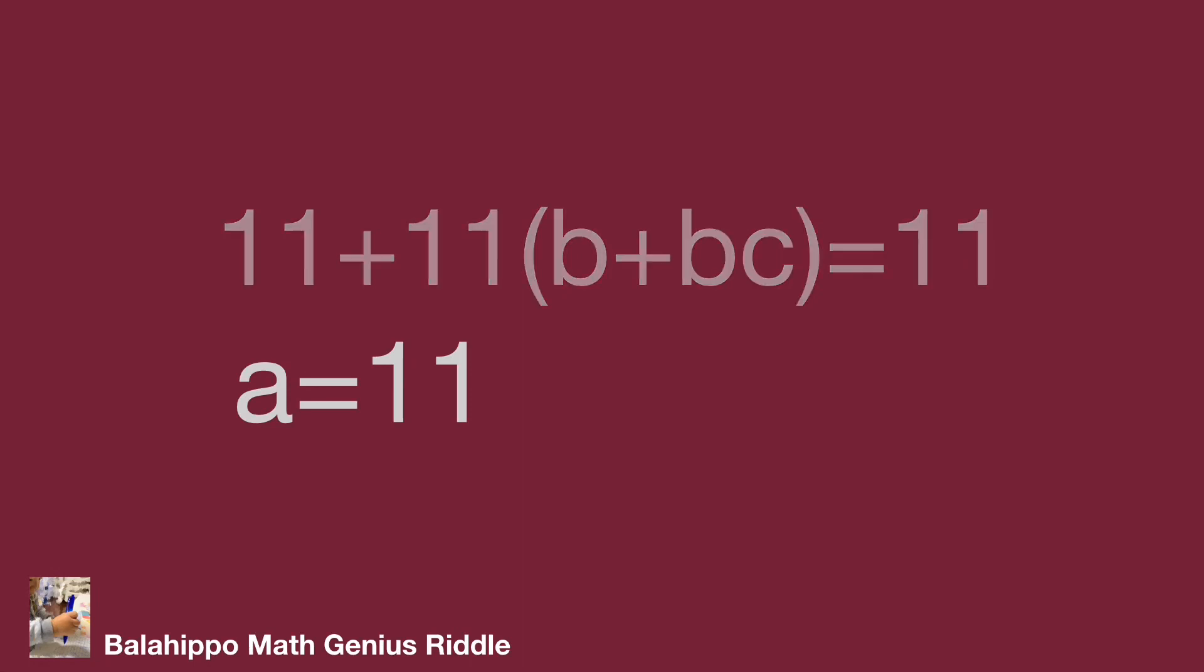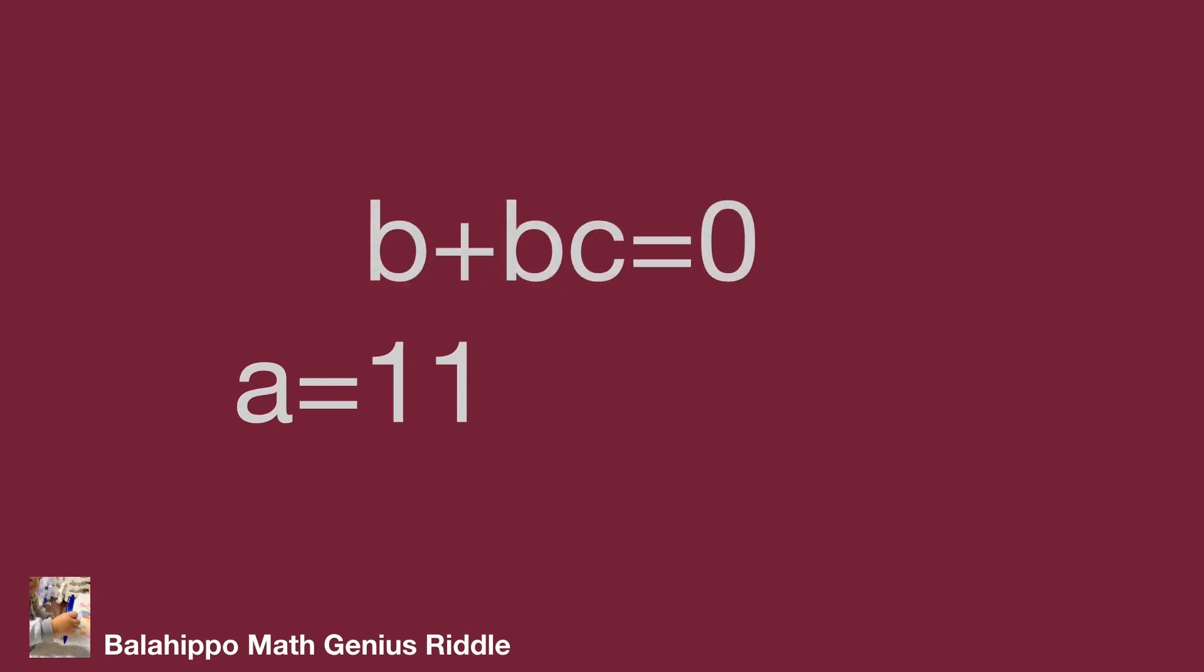This leads to b plus bc equals 0, which cannot be satisfied by positive integers b and c. So we can see a is not equal to 11.